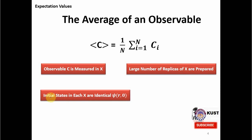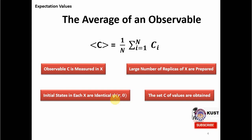We make sure that the initial states in each experiment X are identical. If we do not do this, the experiments will inherently be different and we will get different results. So to ensure we are not using different information, the initial values are set identical across each set of experiments. We then obtain the set of all measured values of C. We measure C in one experiment, make a large number of replicas of the same experiment with the same initial conditions, and then obtain a huge set of values. From these we calculate the average, which we call the expectation value.